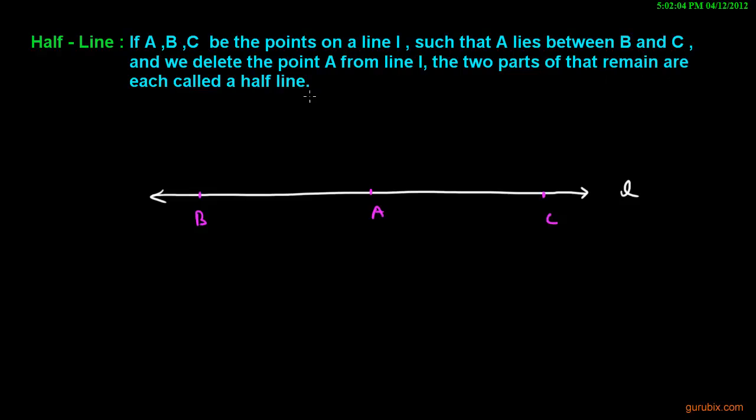And we delete the point A from line L, then the two parts that remain are each called a half line. Suppose we delete this point A, so this part of the line. These two parts, this part and this part, are called half line. This is the separation of line, thank you.